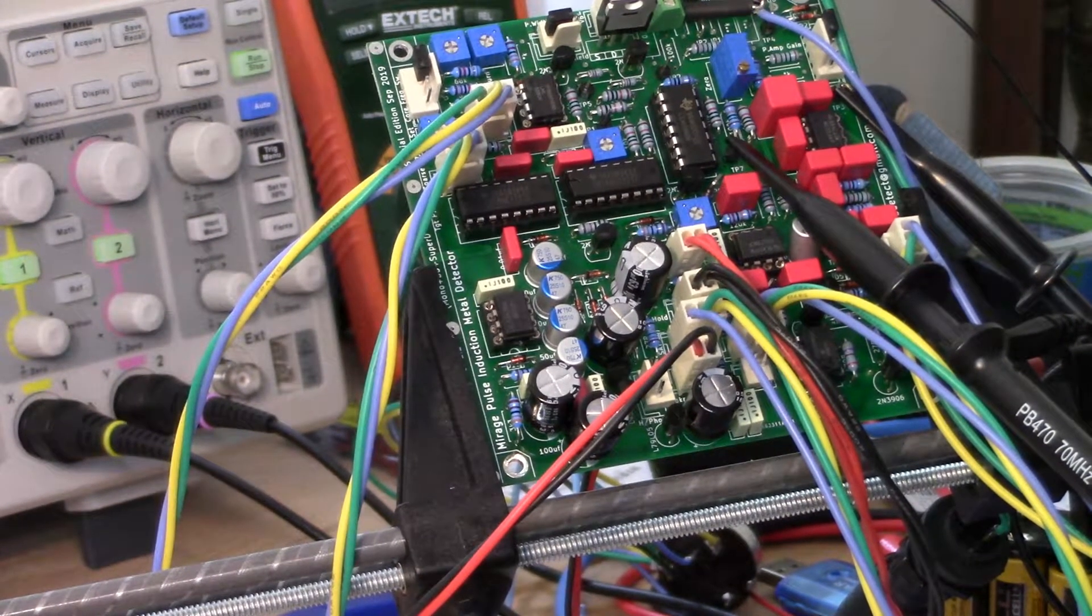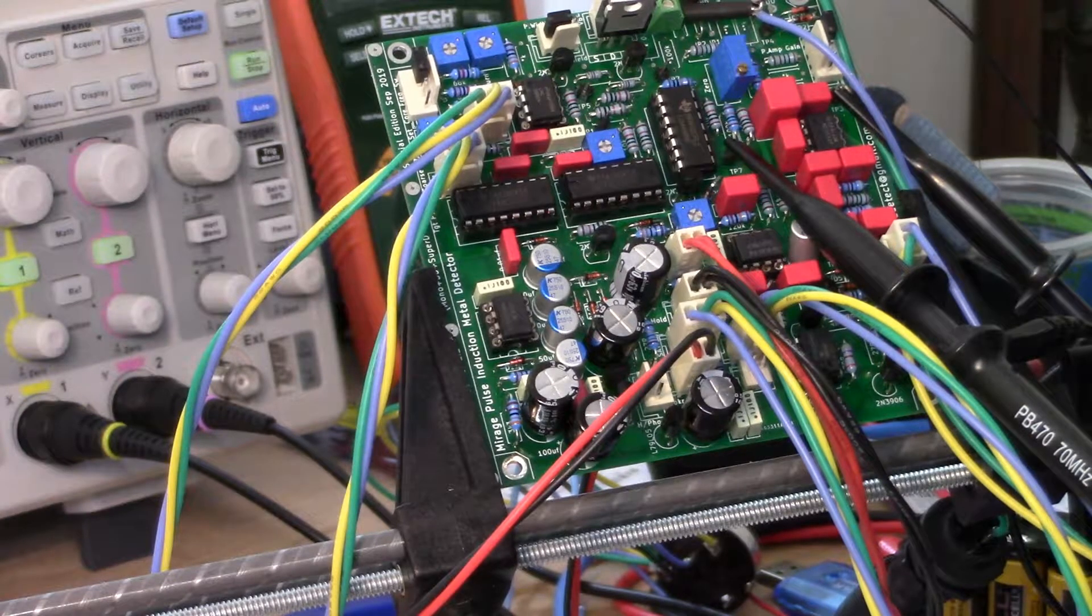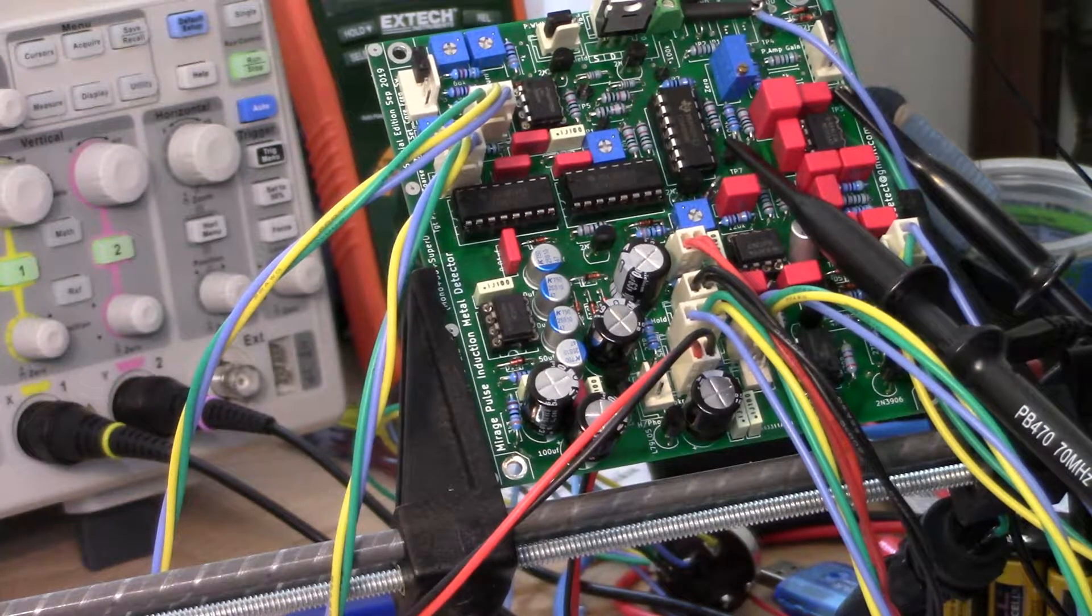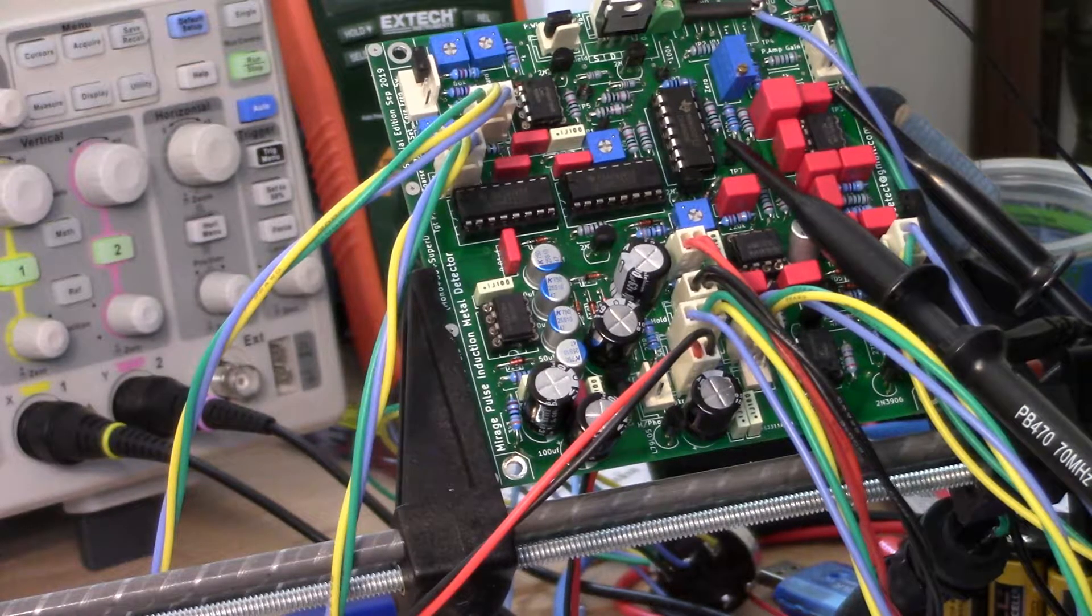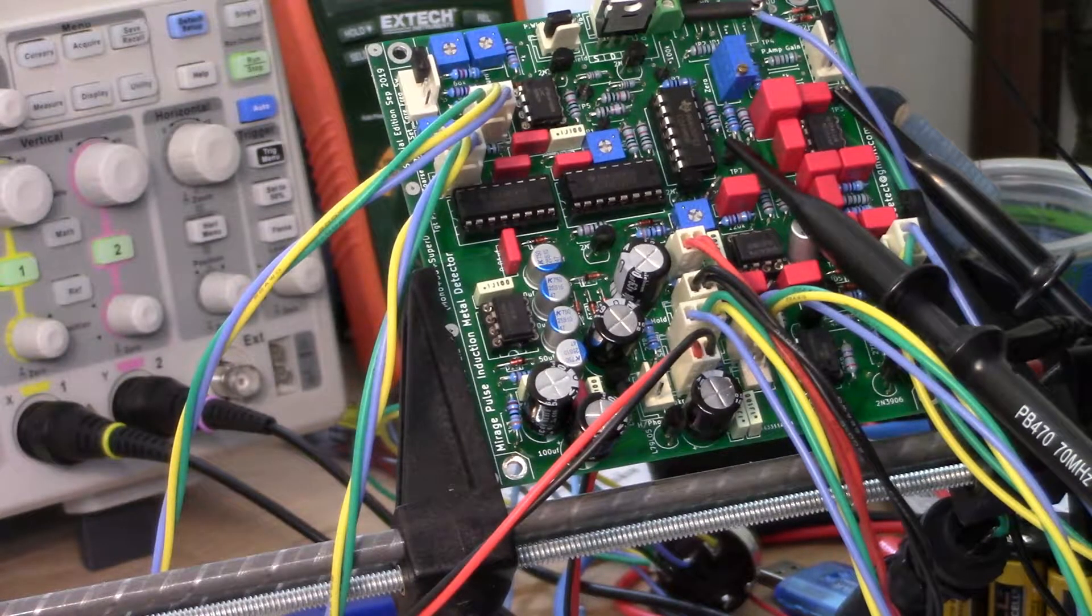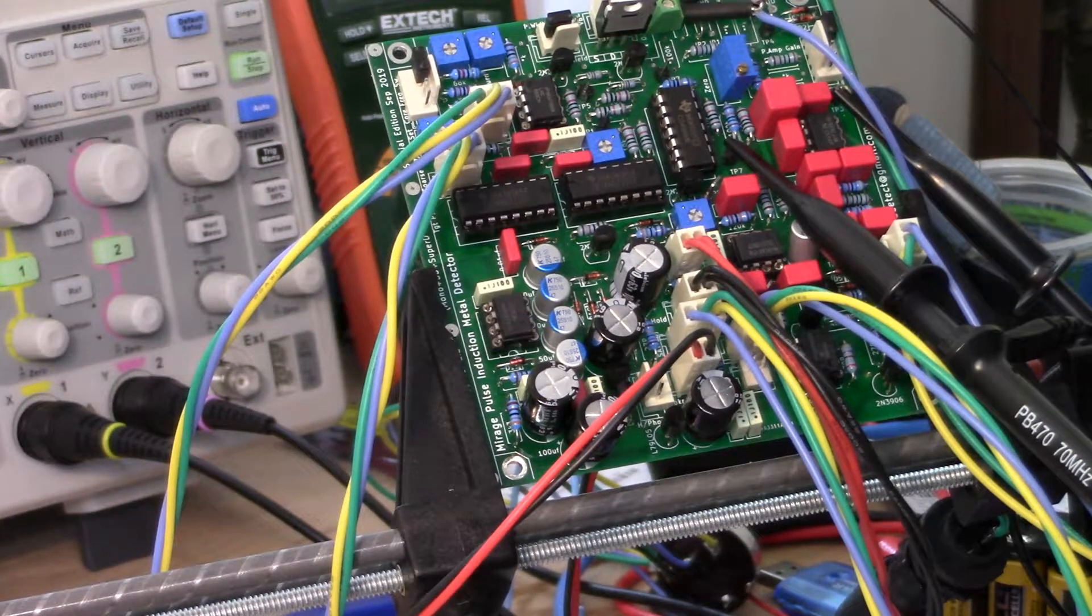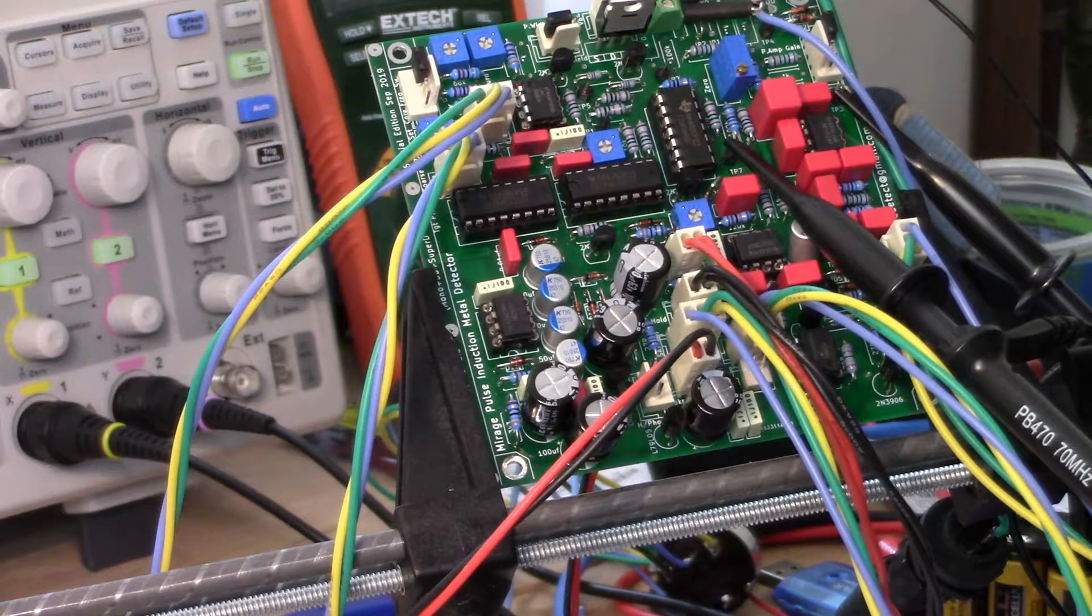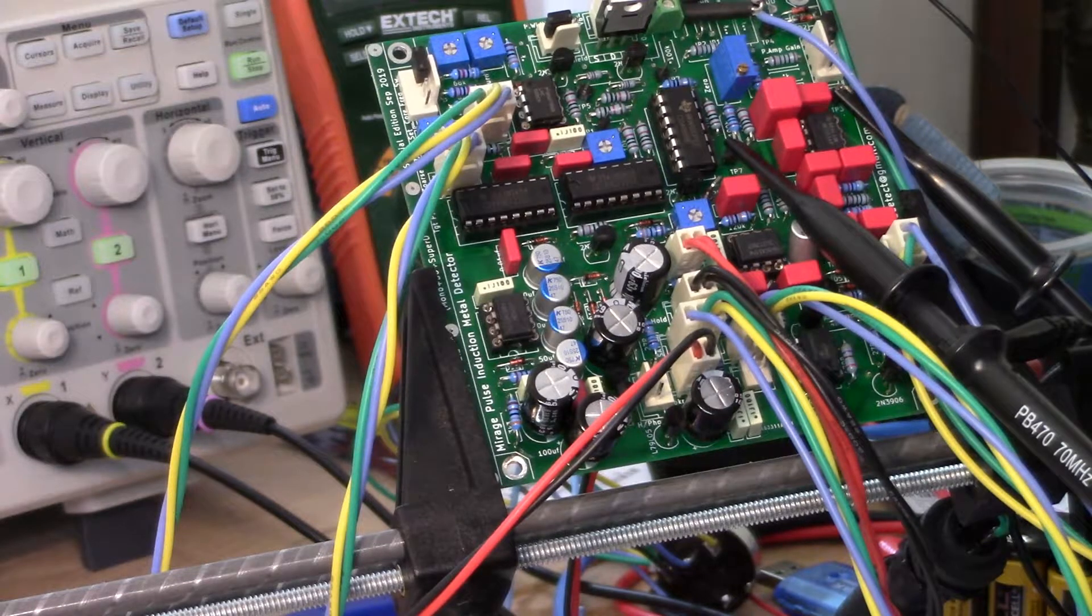Okay, here we are at long last - the final two steps of the Mirage DIY pulse induction build. Actually, it's the calibration, so step six and seven. Step six is just attaching the search coil.